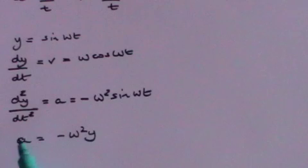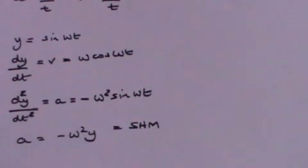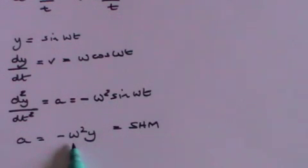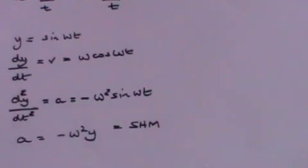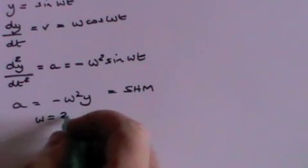This tells us that the acceleration is directly proportional to the displacement y, but in the opposite direction. That is the condition for simple harmonic motion. The omega squared term enables us to calculate the frequency of the oscillations, since omega equals 2 pi f, and f is the frequency.